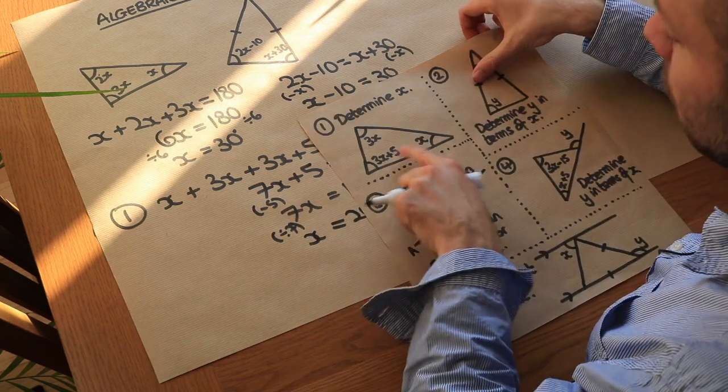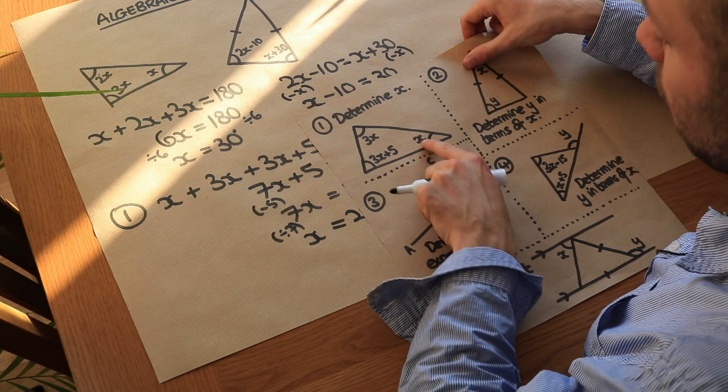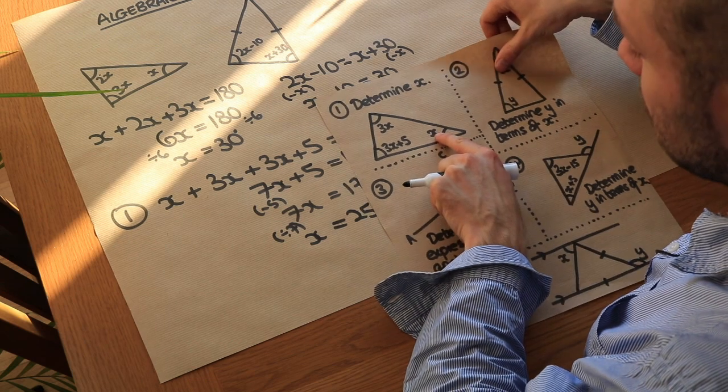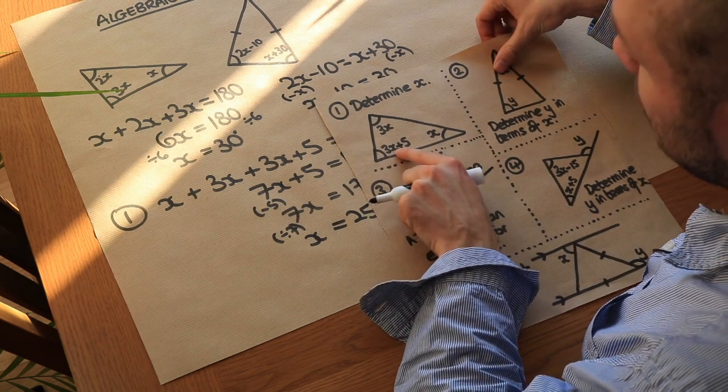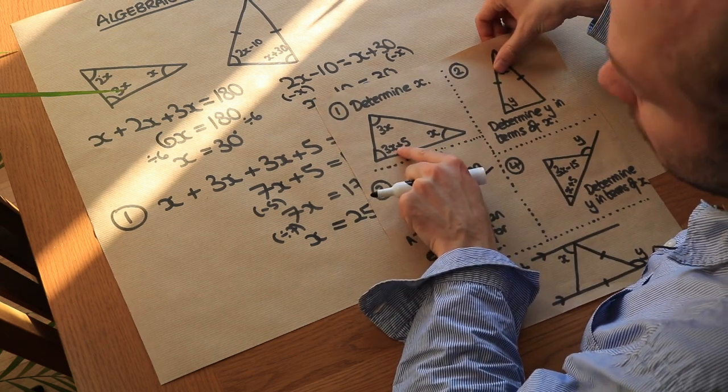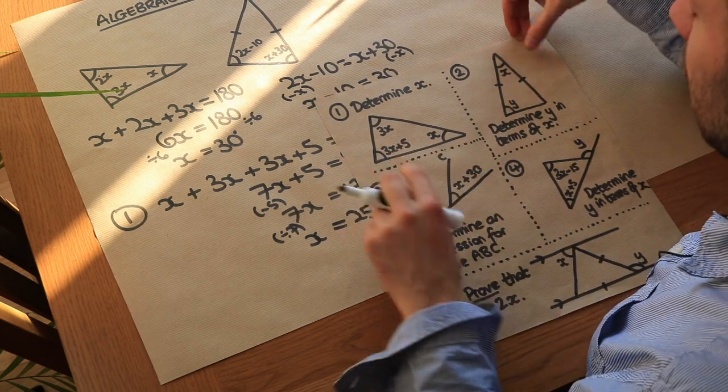We could always find what these three angles are — that angle is 25, and the angle 3 times 25 plus 5 gives us the next one, and so on.